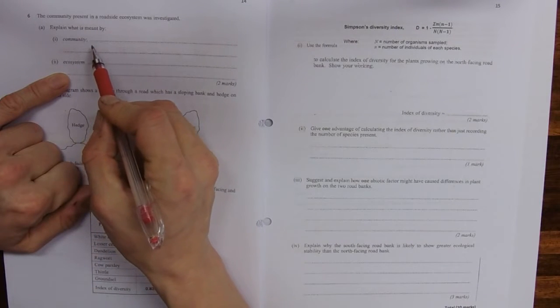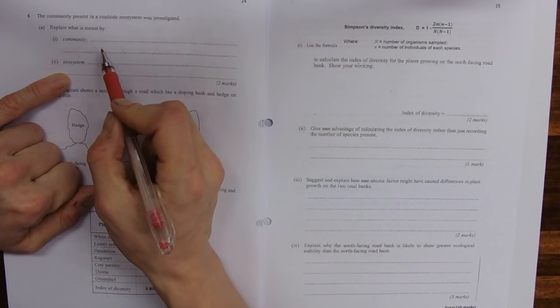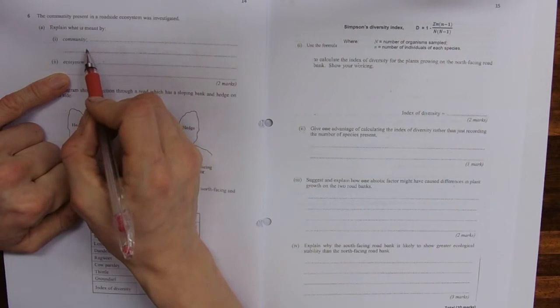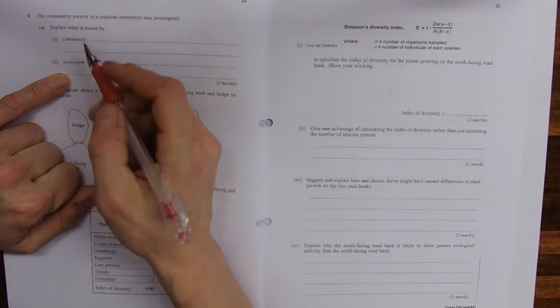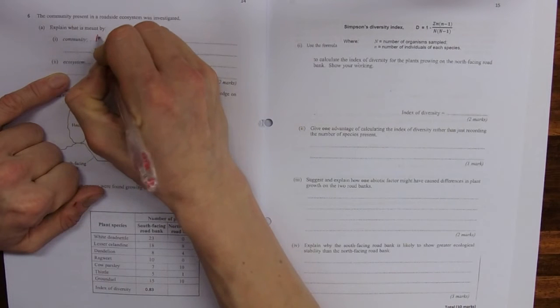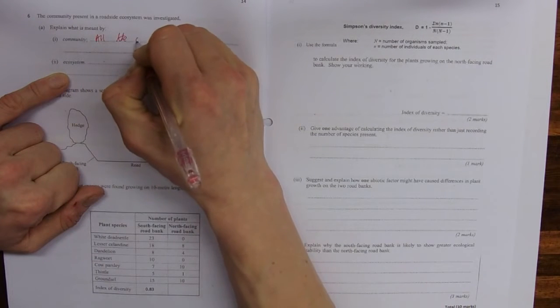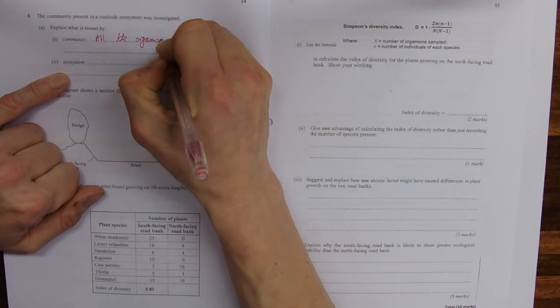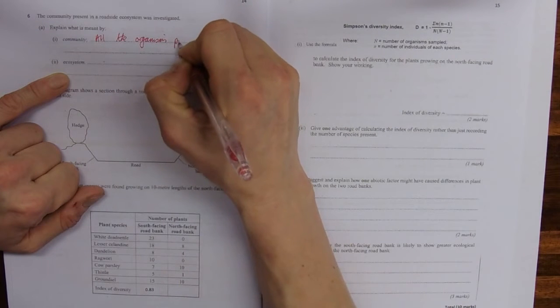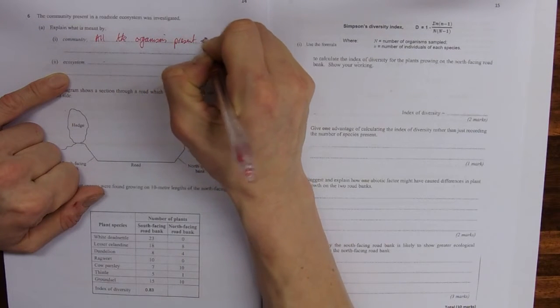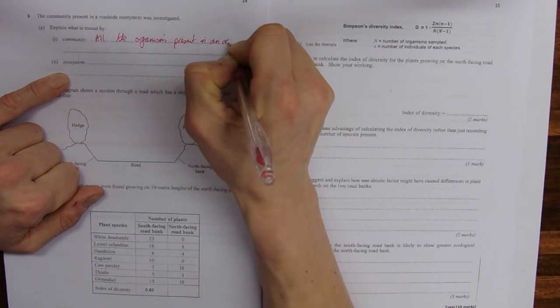So community: cats, dogs, mice, rabbits. Population would be just rabbits, that sort of thing. So all the organisms present in an area.